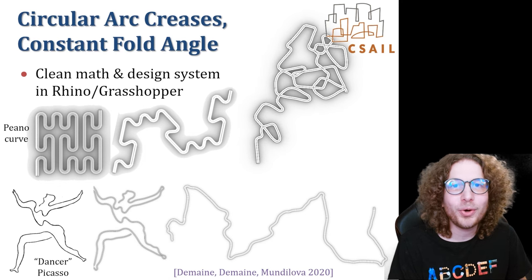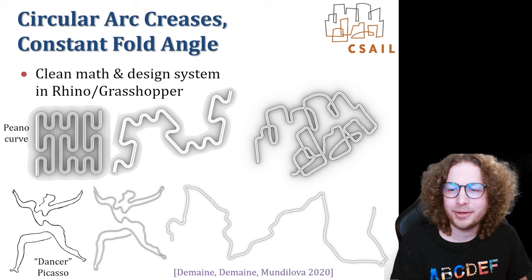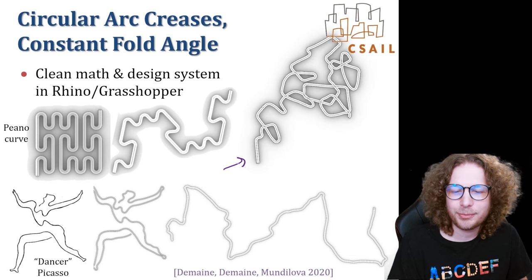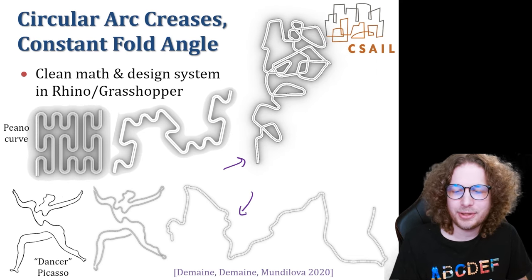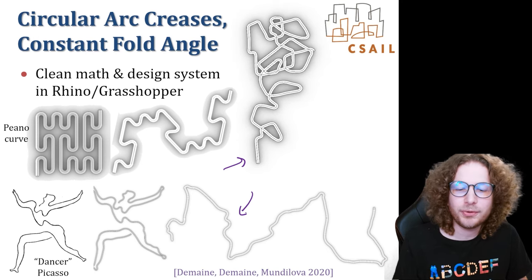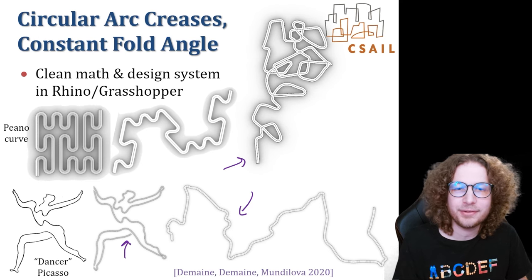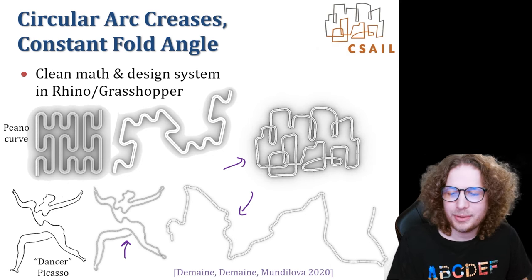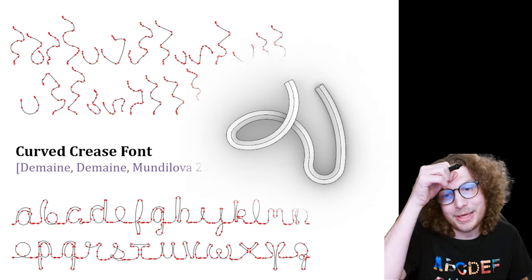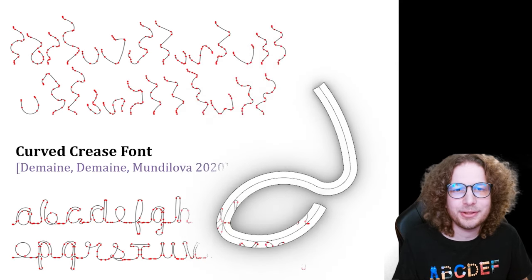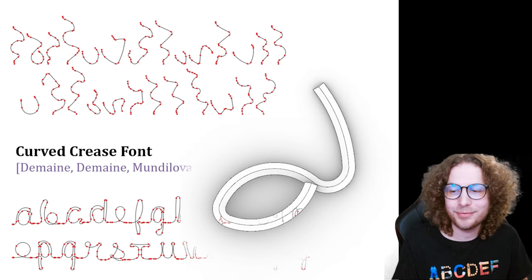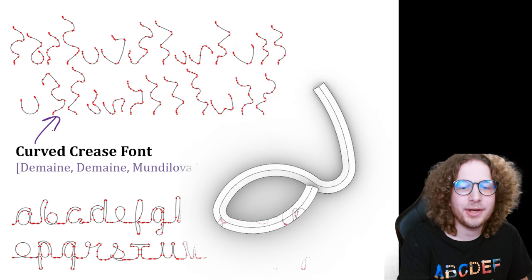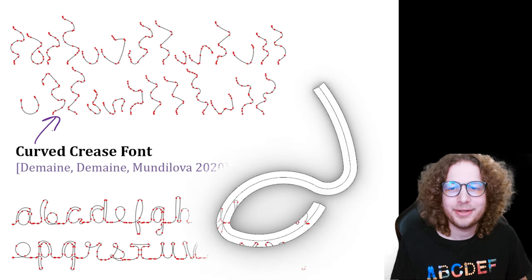Speaking of one fold: if you take one curved crease, you can do some pretty crazy things. On the right you see the CSAIL logo being folded from a long curved strip of paper. More impressive is a non-self-intersecting strip of material that, folded along a central crease, becomes Picasso's dancer. This is part of a mathematical and computational design system with Clara Mandalova to make anything you want — including cursive letters of the alphabet. Here you see the folding of a capital B, and unfolded they are completely unintelligible.